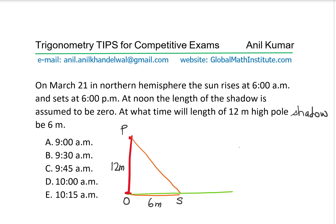Now basically, when the sun rises, the length of the shadow is going to be infinitely large, so we can say this is zero degrees. And as the sun rises, the shadow length decreases — it keeps on decreasing. We are interested at the point when the shadow length is half the height.